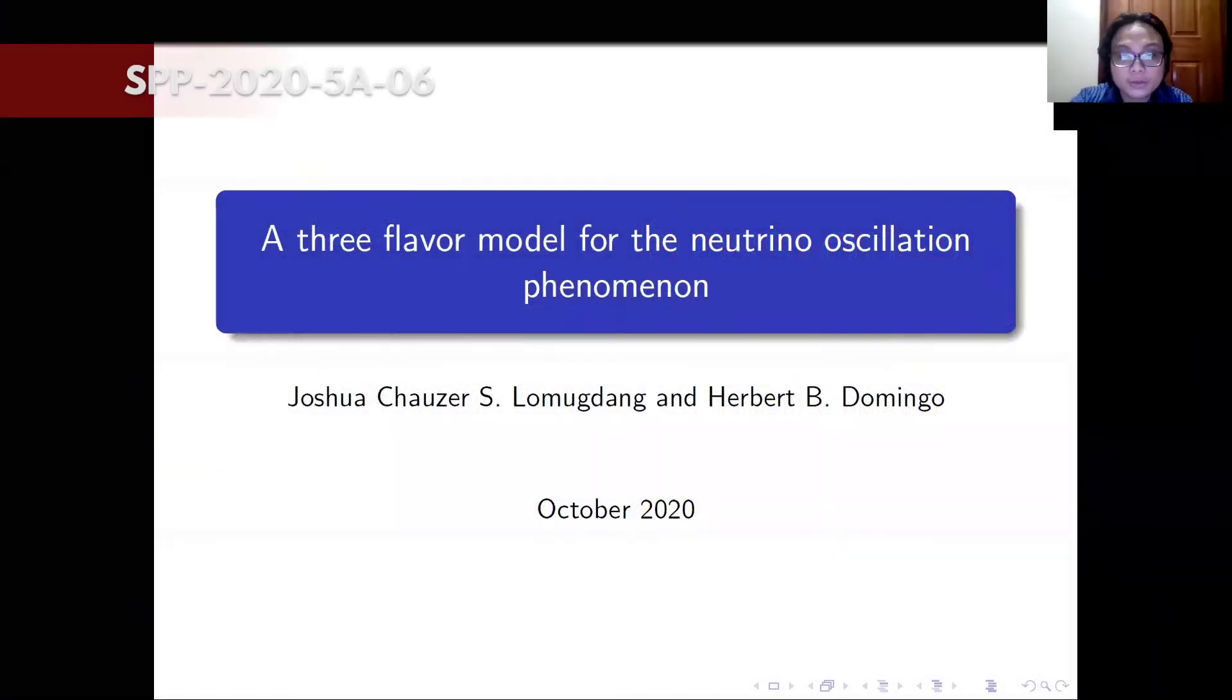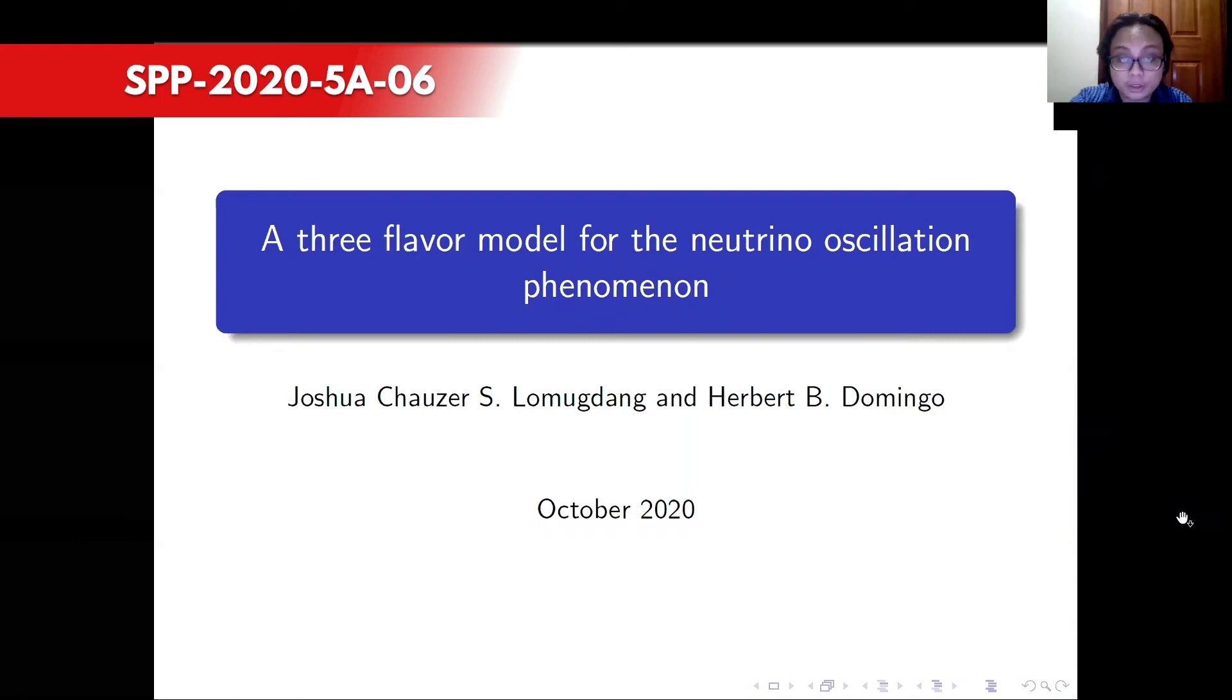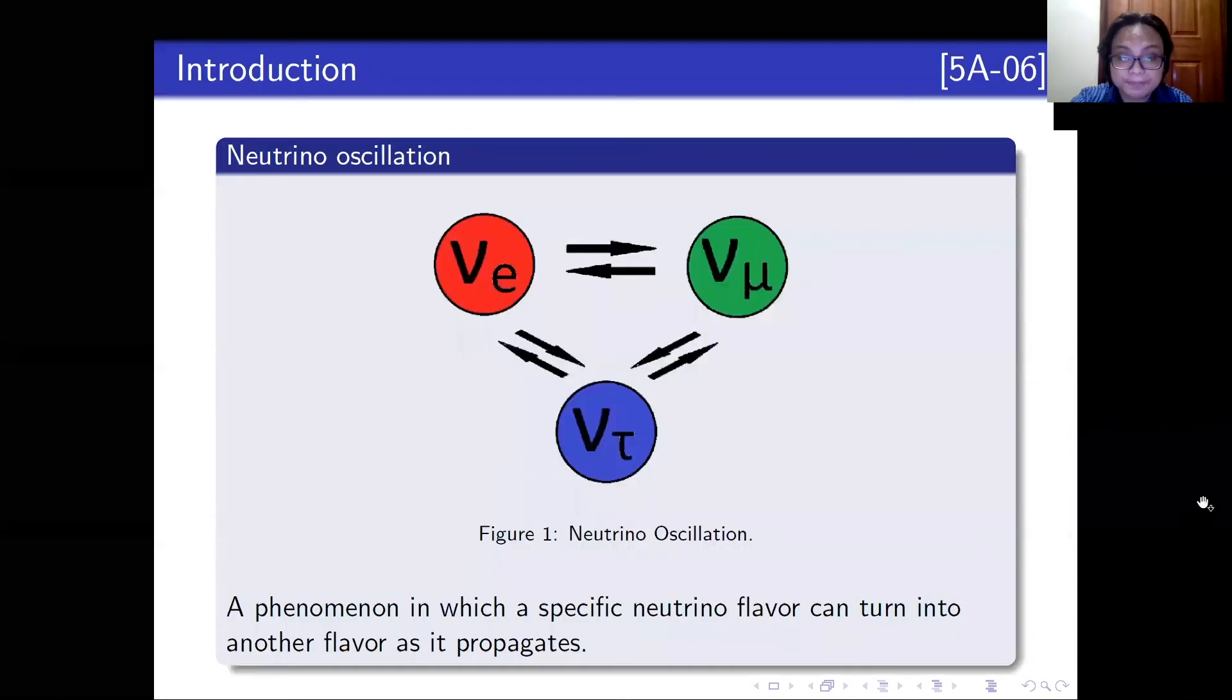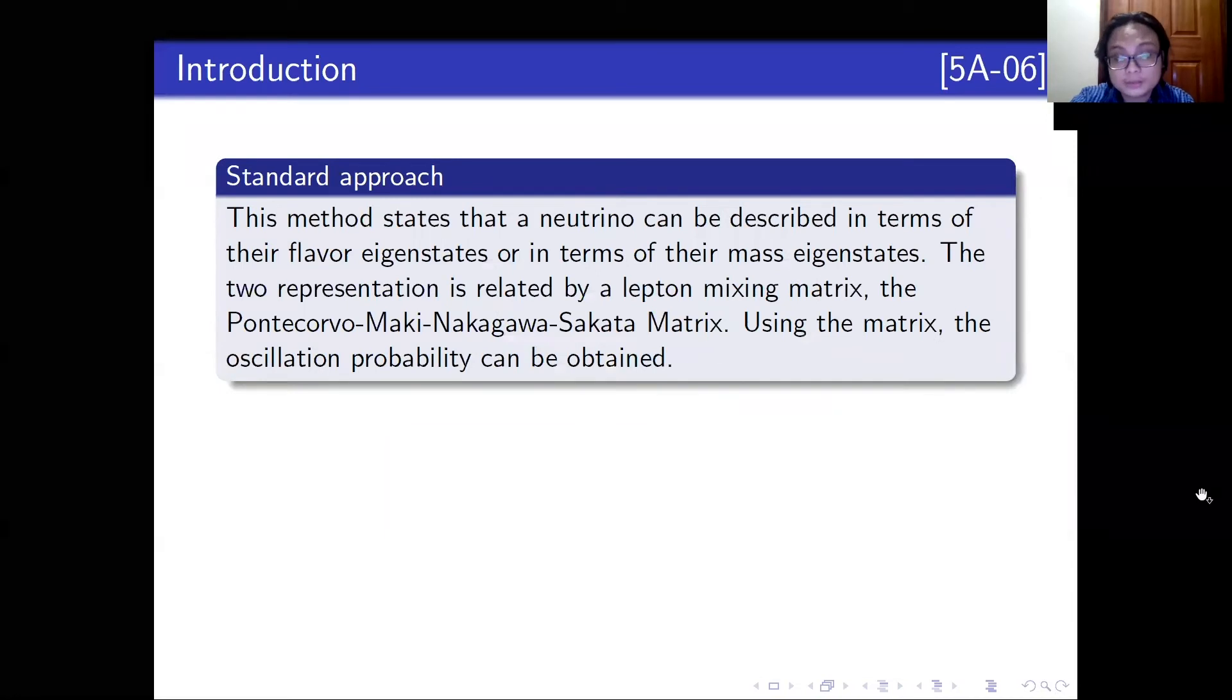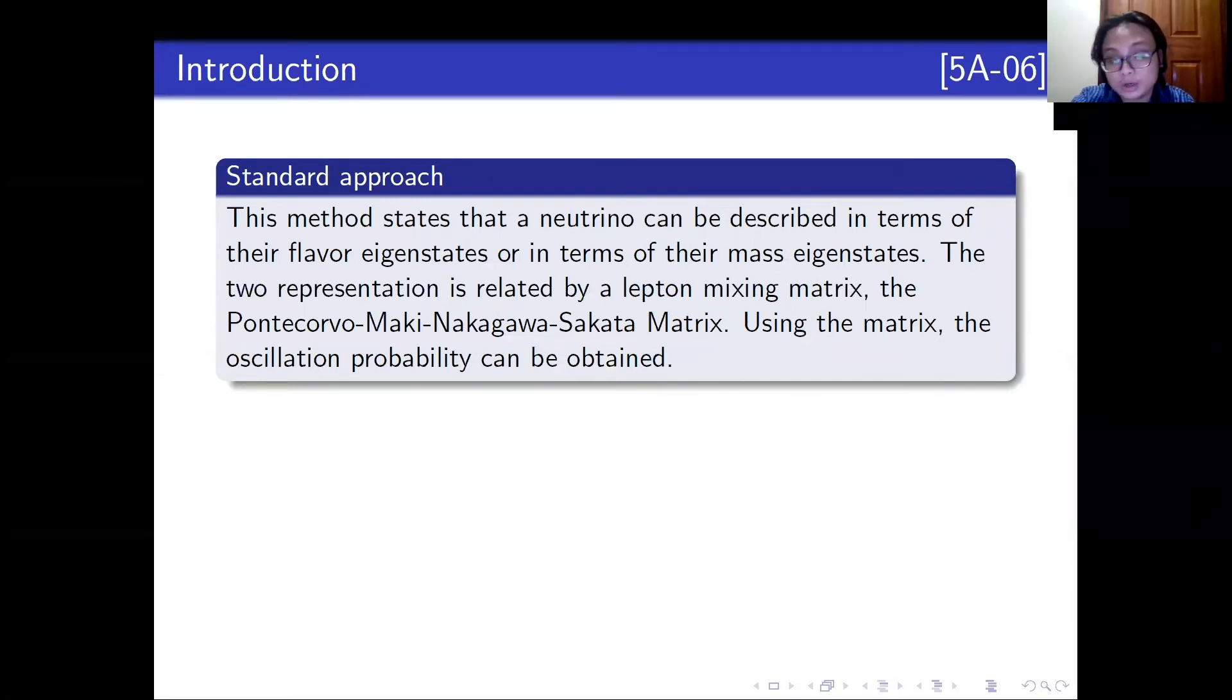Good morning everyone. I'm Joshua Choser-Limugdang and I'm here to present a three-flavor model for the neutrino oscillation phenomenon. First, neutrino oscillation. It is a phenomenon in which neutrino flavors can turn into another flavor as it propagates through space. When it comes to theory, this phenomenon has been modeled throughout the years. One of such methods is the standard approach that uses lepton mixing matrix in order to obtain oscillation probabilities of a three-flavor system.